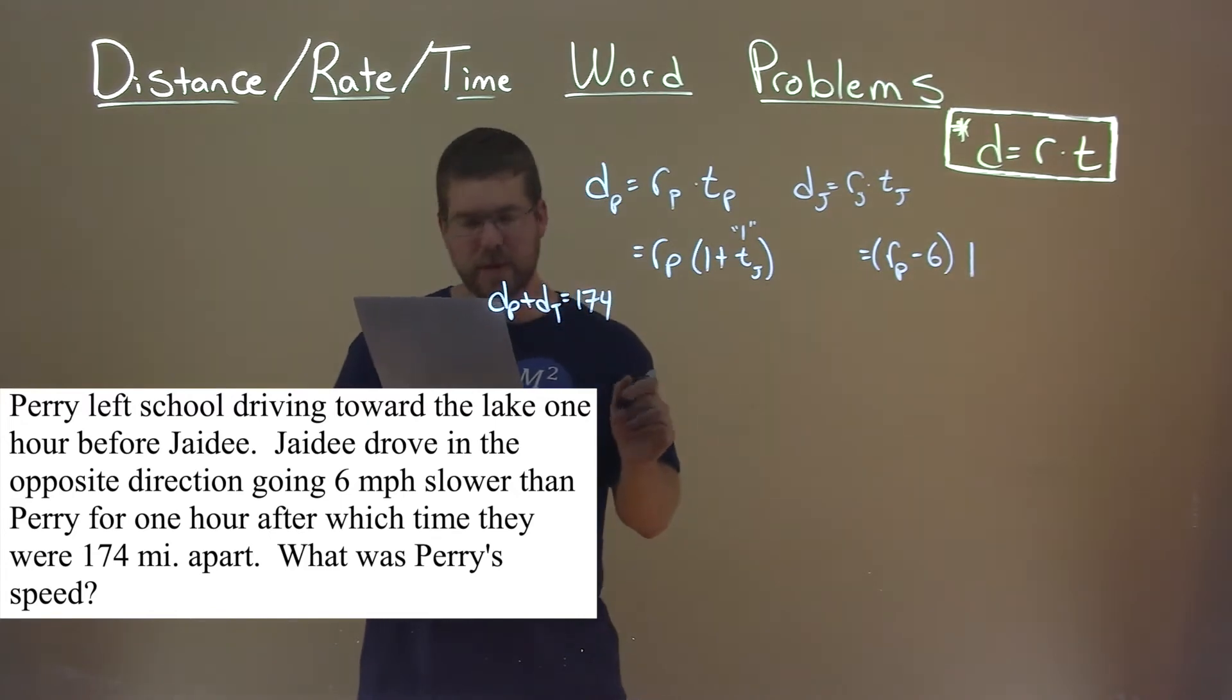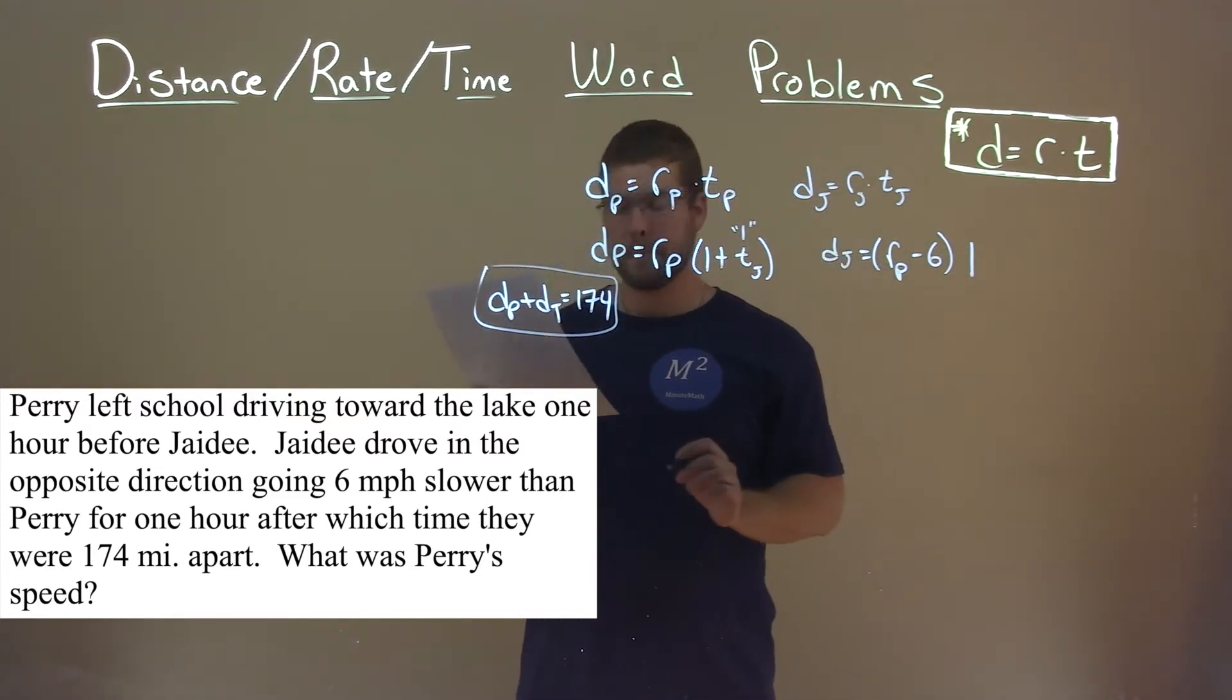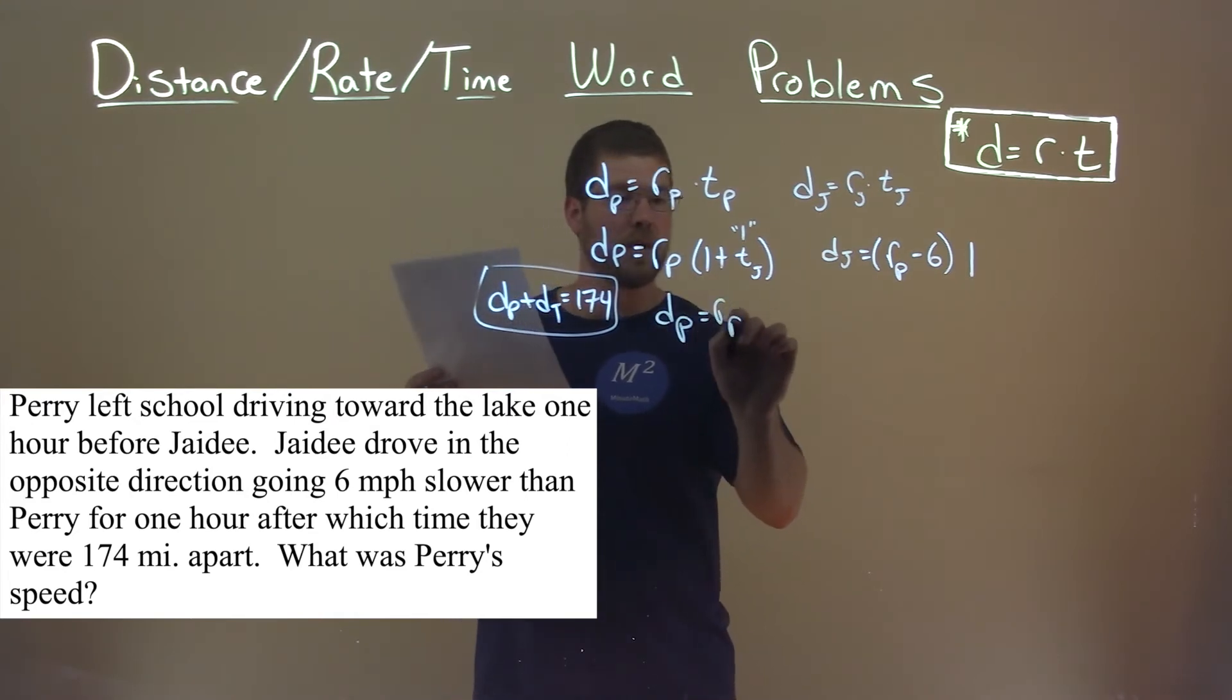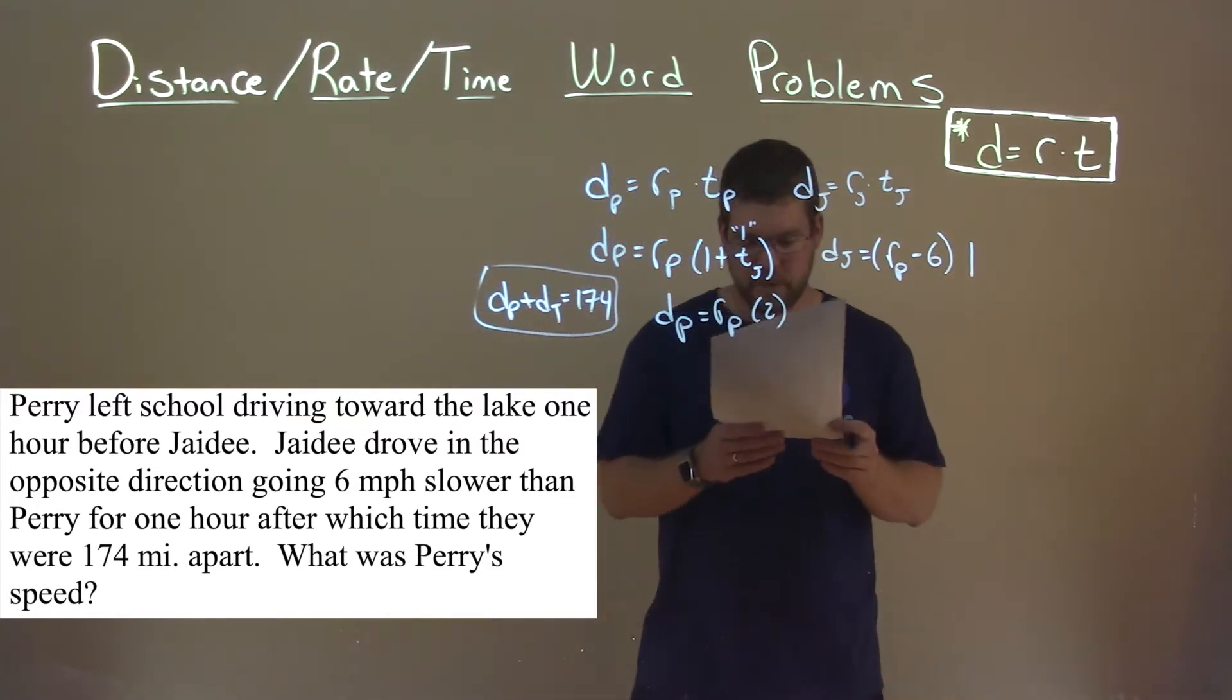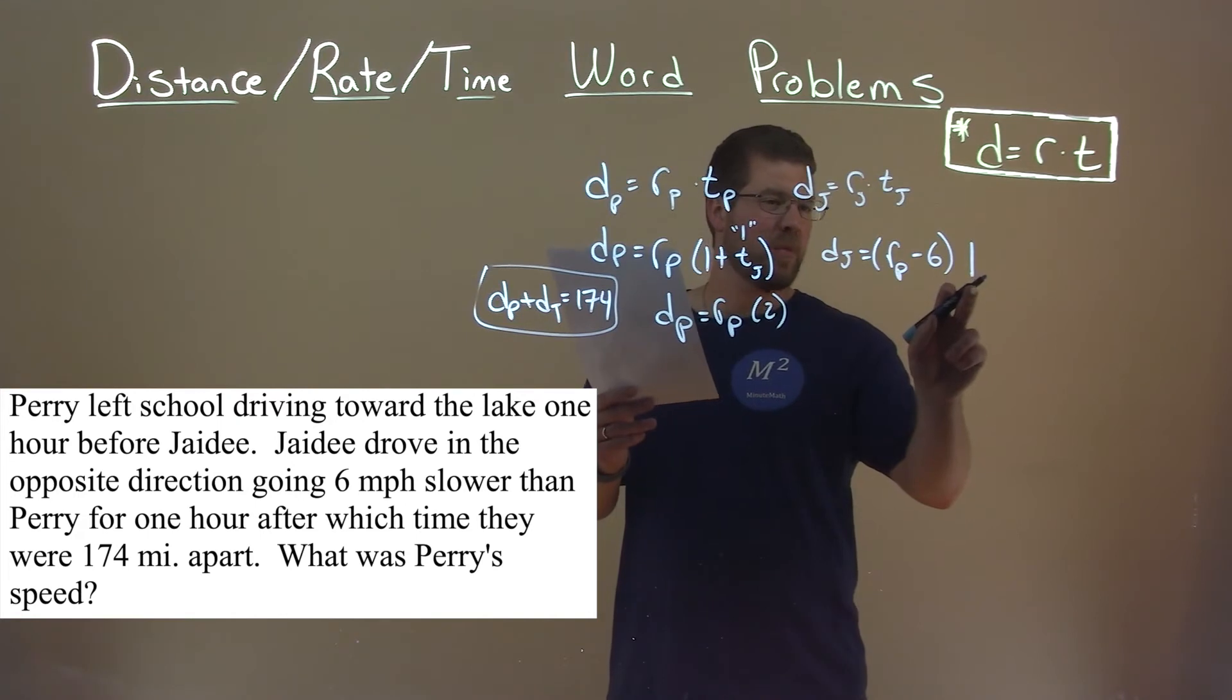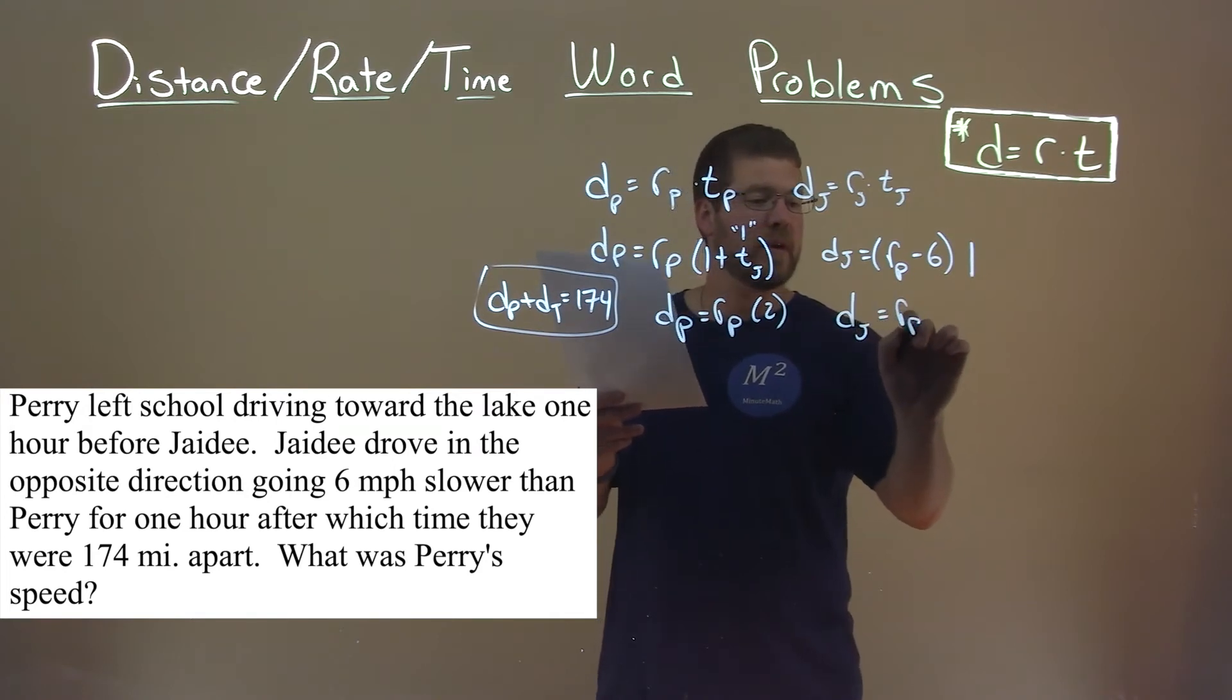So let's simplify what we can. There's D of P here, keep that a little separate. And we have D of J. So let's rewrite what we can. D of Perry is the rate of Perry, and 1 plus 1 is 2. Multiplying this out, D of J is all this times 1, R of P minus 6. Distance of JD is R of P minus 6.